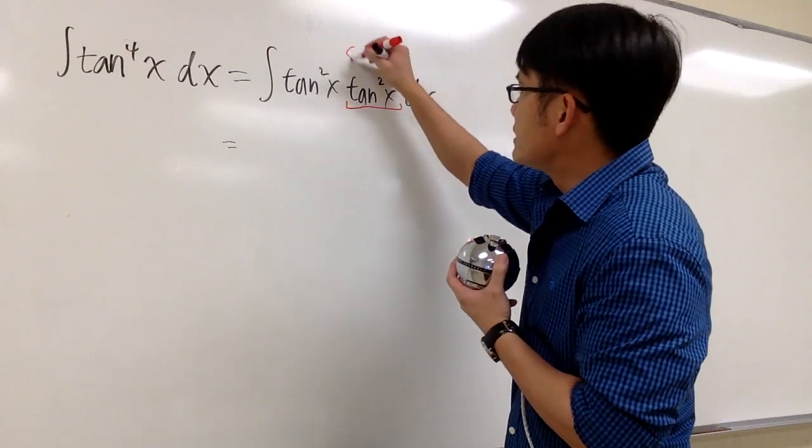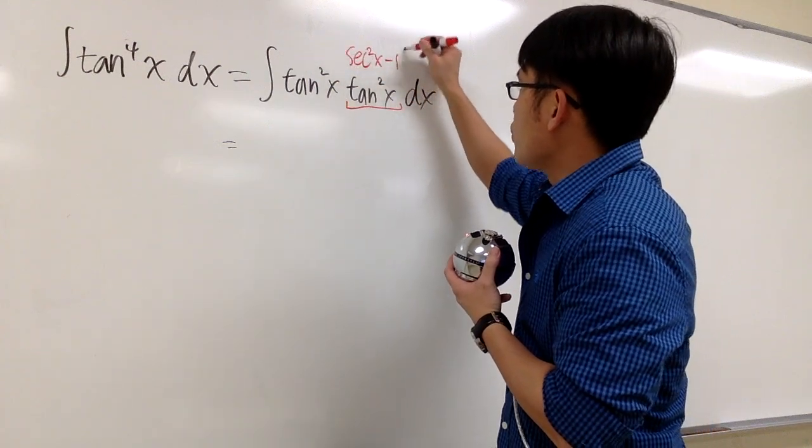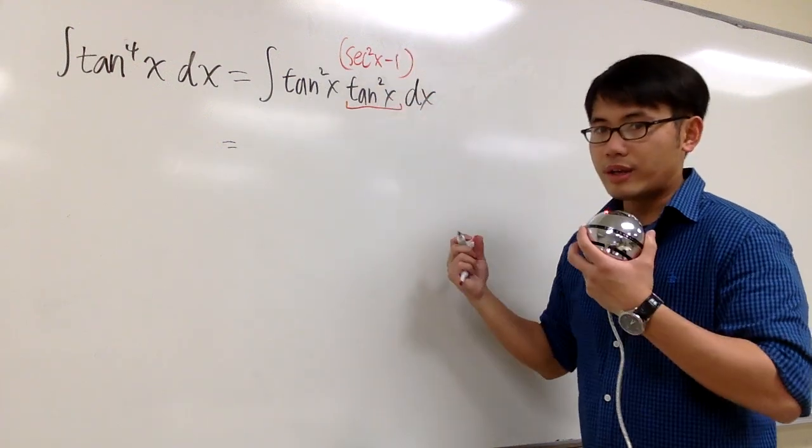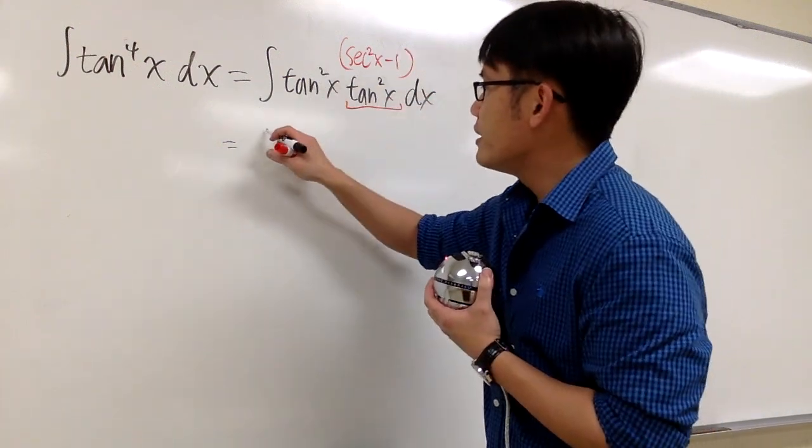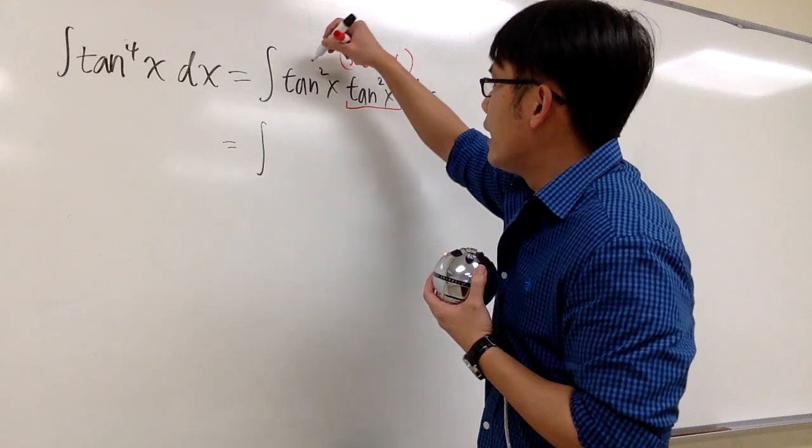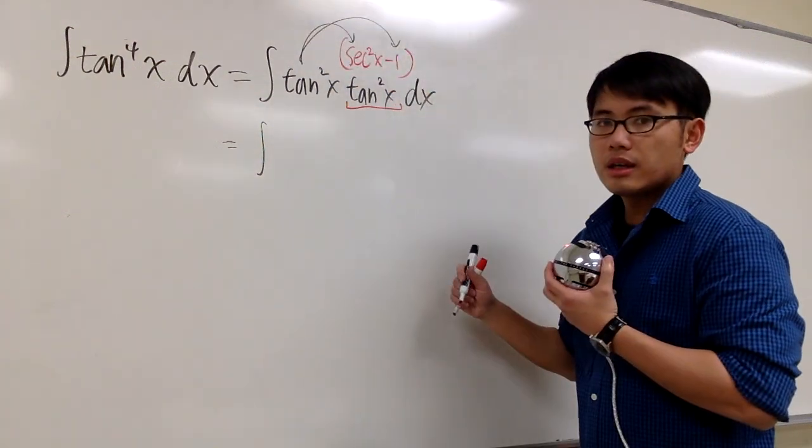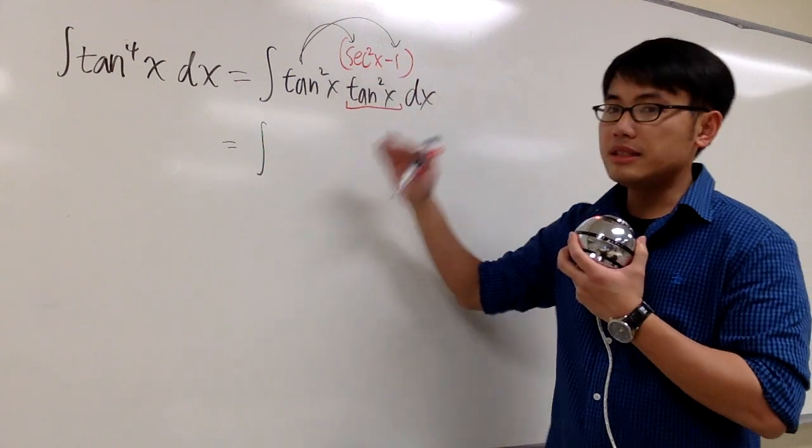Tangent square is the same as secant square x minus 1. So I would like to do that. Let me just make this into the secant to see what we can do afterward. And then this will be the same as the integral. I can take the tangent square and then distribute it into the parentheses, and then I'm going to have two things inside of my integral.